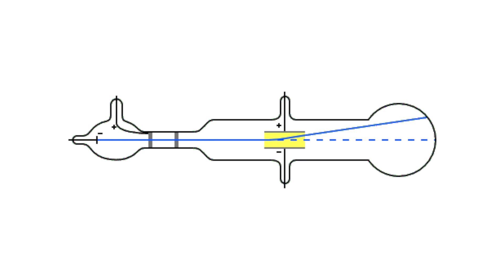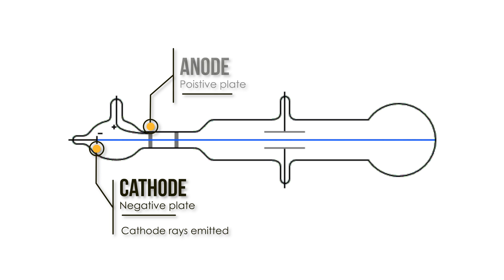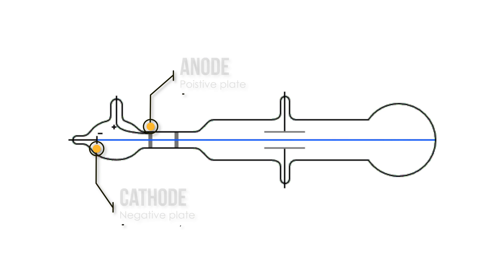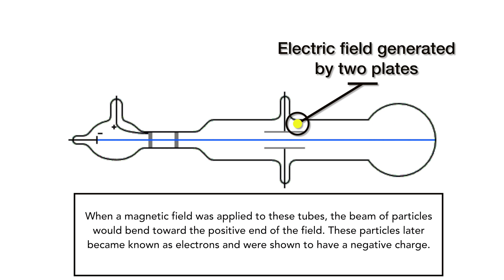When electricity was flowed through the tube, it produced a beam of particles that moved from the negative plate known as a cathode to the positive plate known as the anode and would produce a dot on a fluorescent surface. These tubes are actually what early TVs used to create a picture.